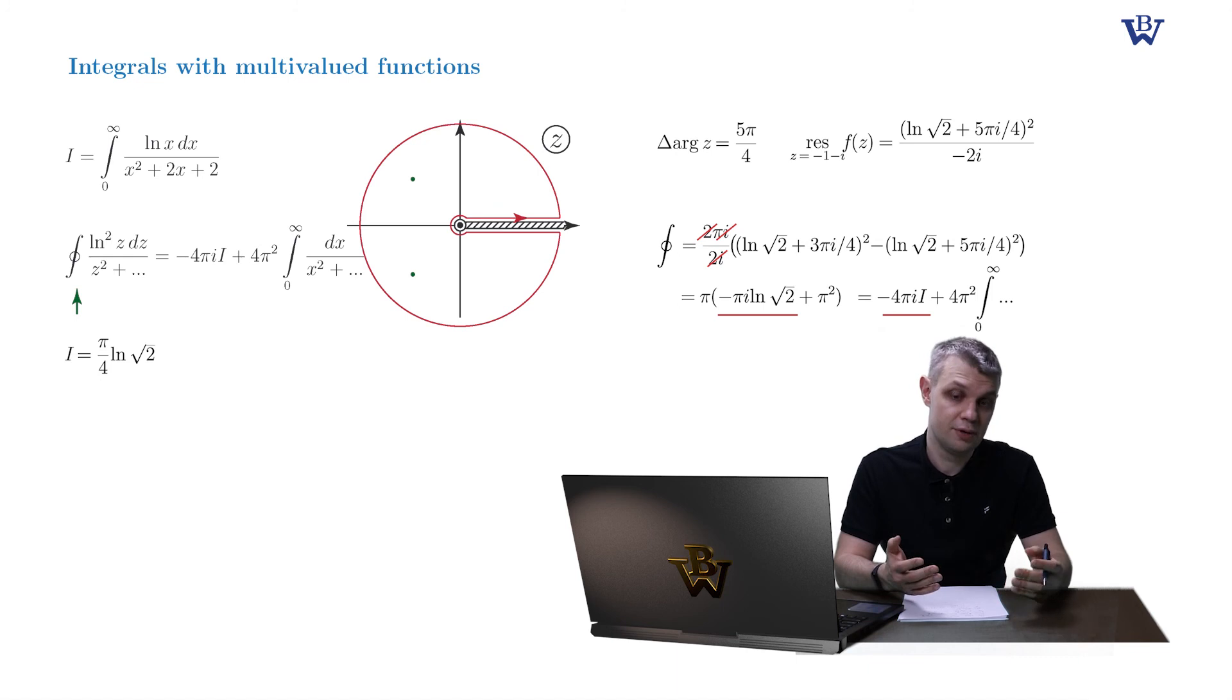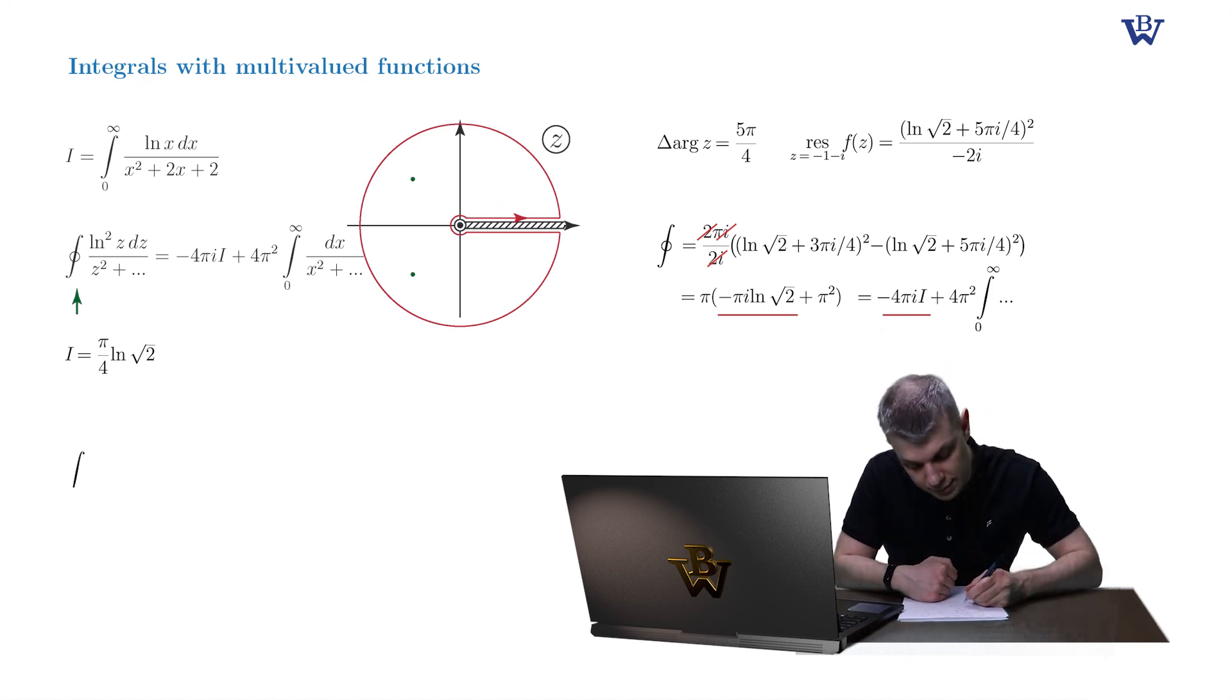And as a bonus we obtained our remainder integral which is simply pi by 4.